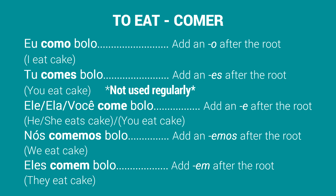To eat — Comer. Full conjugation: Eu como bolo. Tu comes bolo. Note that this form for 'you' is not used in São Paulo — it's only used in other states. Ele come bolo. Ela come bolo. Você come bolo.